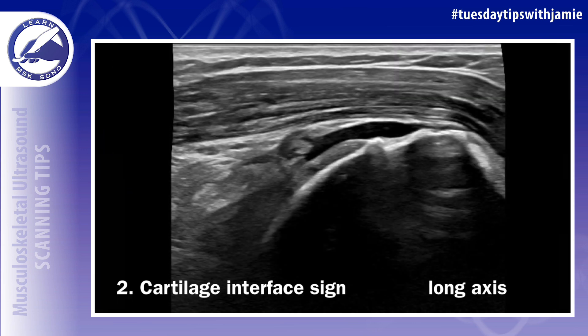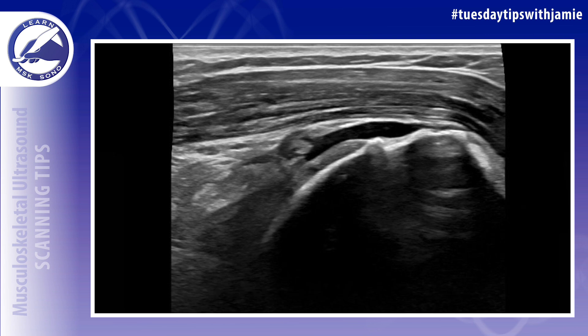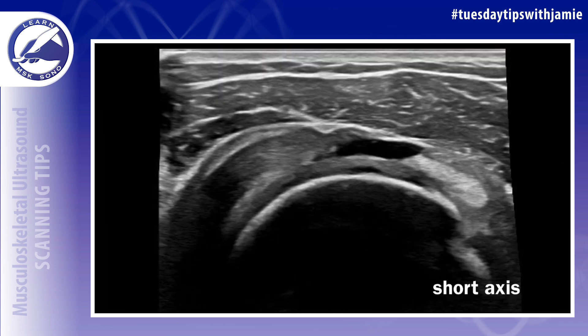Number two: a cartilage interface sign, also known as a double cortex sign, signifies the presence of a thin hypoechoic line deep to the tendon at the interface between the hypoechoic articular cartilage and the fluid present in a rotator cuff tear. This prominent hypoechoic line is caused by the reflection of the sound waves at the fluid cartilage interface.